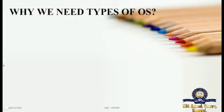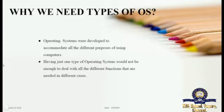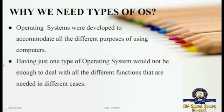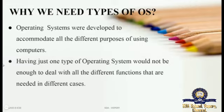Why do we need types of operating system? Why can't we have only one type? There is some reason behind that. Operating systems were developed to accommodate all the different purposes - it is not only satisfying one purpose, it is satisfying multiple purposes of using computers. You can take a printout, save a document, listen to songs, watch video. Having just one type of operating system would not be enough.